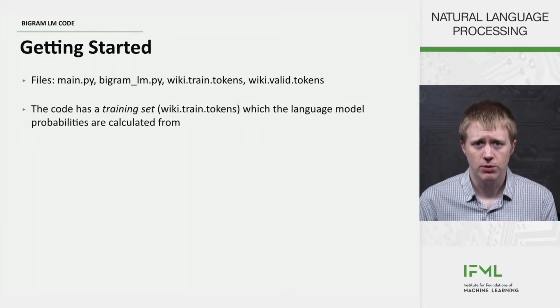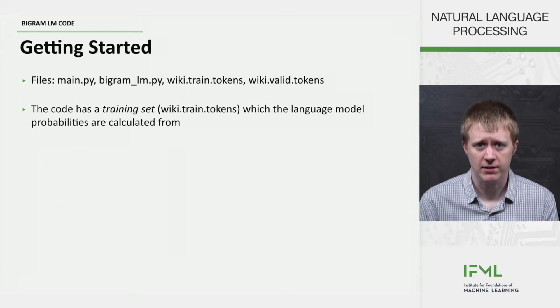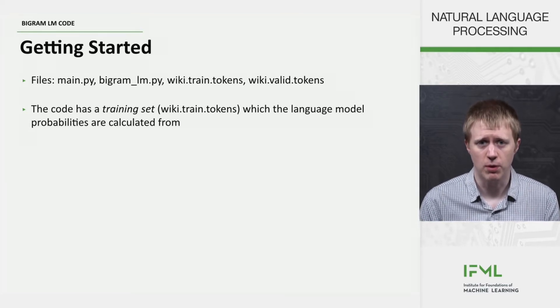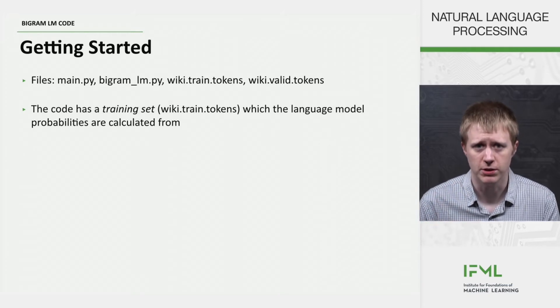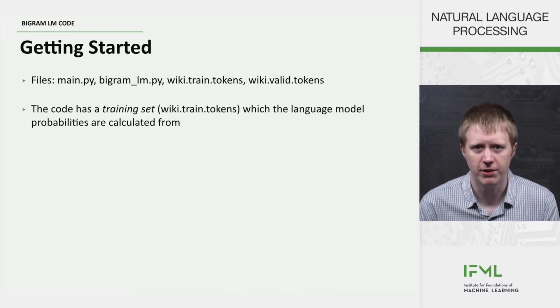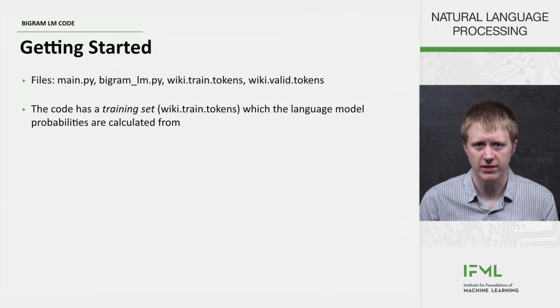The second two are data files which contain a whole bunch of text. The trained one is what we call the training set, which is what we're going to count to get those language model probabilities based on those counts of the different pairs of words and things like that.